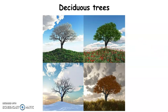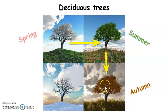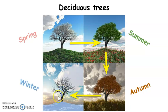Here is a picture of a real deciduous tree. Wow! See how different it is in each season? In spring, new leaves are growing. In summer, the tree has all of its leaves. In autumn, the leaves change color — see how they are orange and brown, not green? Also, in autumn, the leaves fall. In winter, this deciduous tree has no leaves. But in spring, the cycle will start again.